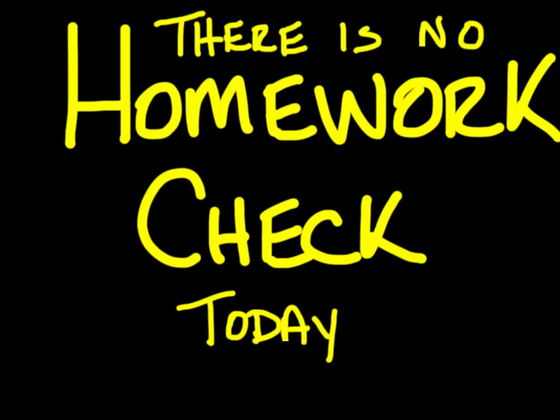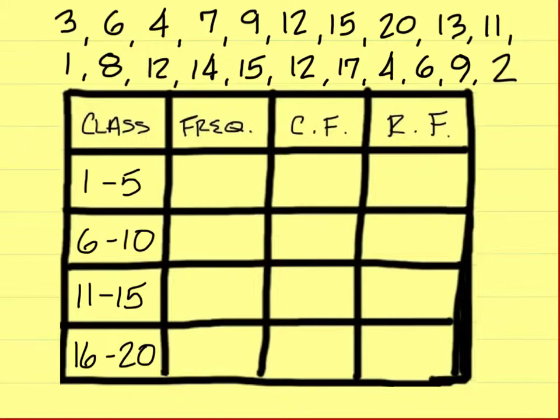No homework check again today because we won't have time, but we'll do it tomorrow. Here's an example of something different today. You have a list of numbers up at the top and then you have your table down here at the bottom. Notice you have frequency, cumulative frequency, and then you have an RF on the far end. I'll explain what that is as soon as we get to it.